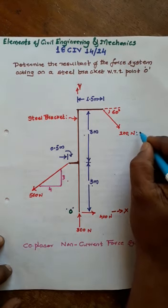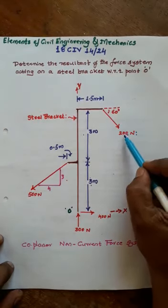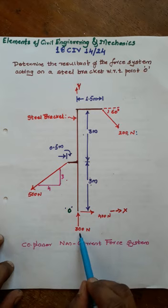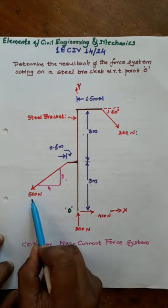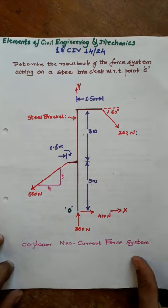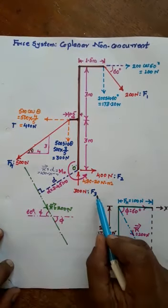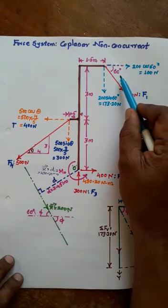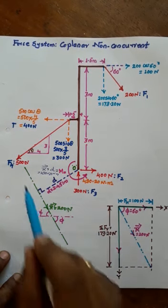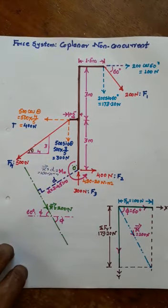We name the forces F1, F2, F3, and F4. The force of 200N makes 60 degrees with the x-axis. F2 is acting in the positive x-axis direction. F3 is also acting in the positive x-axis direction. F4 is inclined at 4 horizontal to 3 vertical.